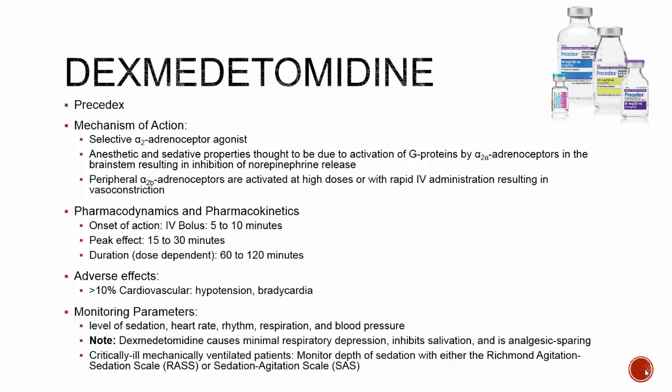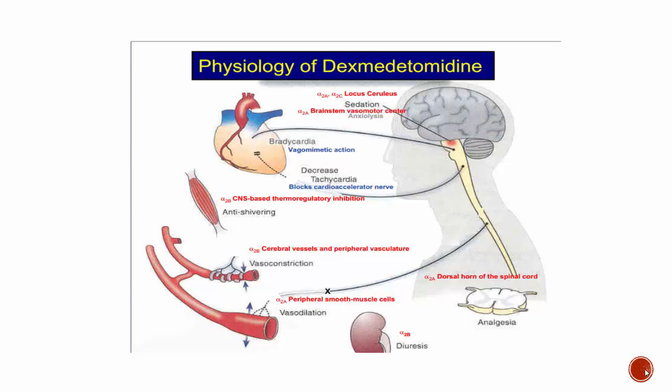Precedex has a rapid onset of action within 5 to 10 minutes with IV bolus and takes effect within 15 to 30 minutes. Duration is dose-dependent but ranges from one to two hours. The most notable adverse effects are hemodynamic — hypotension and bradycardia — occurring in at least 10% of patients. Monitoring includes level of sedation, heart rate, rhythm, respirations, and blood pressure. It causes minimal respiratory depression and is analgesic-sparing.